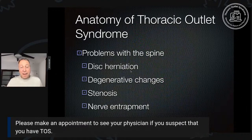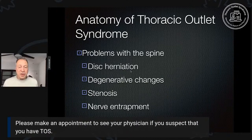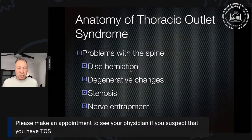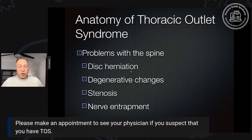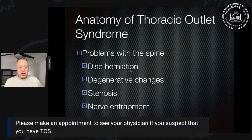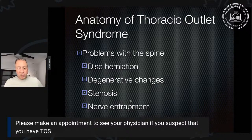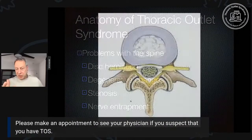So now, what happens if we have a problem with the spine? Here are a few things that can happen: disc herniations — everybody's heard of a slipped disc or a herniation — degenerative changes over time, stenosis or narrowing (stenosis is a word you may see on your MRI or CAT scan report), and nerve entrapment. TOS is a form of nerve entrapment, the same thing that happens in the spine — just caused by different structures and different pathologic processes.